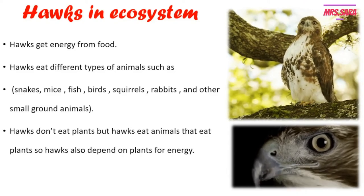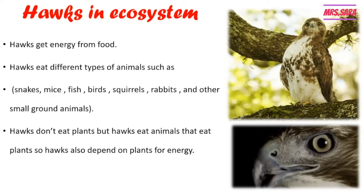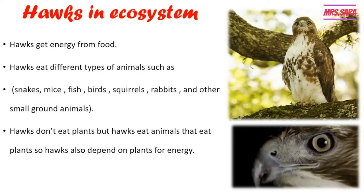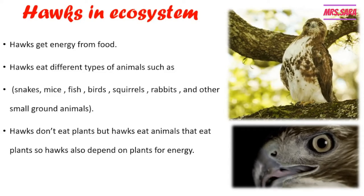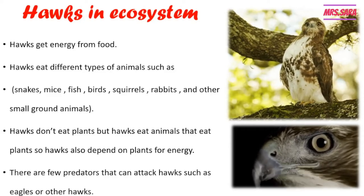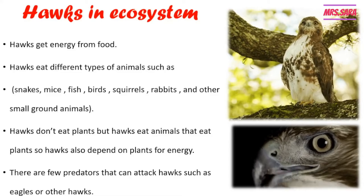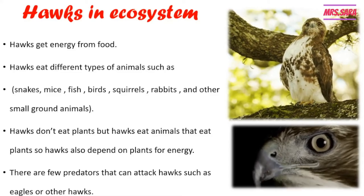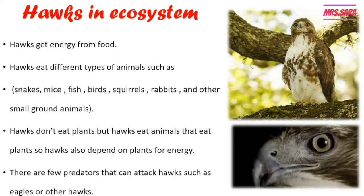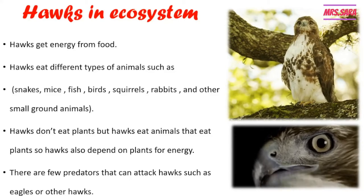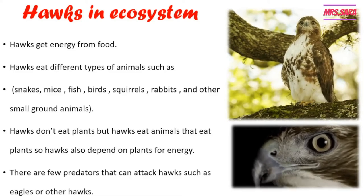Hawks don't eat plants, but they eat animals that eat plants, so hawks also depend on plants for energy, as energy flows from the plant to the animal that hawks eat. There are few predators that can attack hawks. The predator is like a cat that eats mice — the cat is the predator and the mice is the prey. Hawks have few predators such as eagles or other hawks.